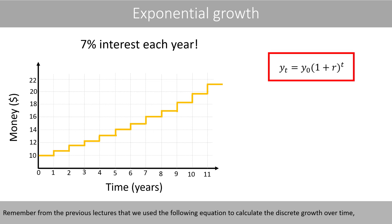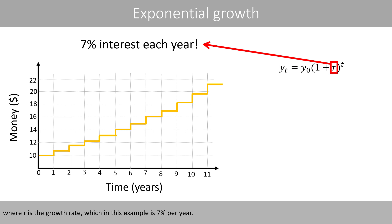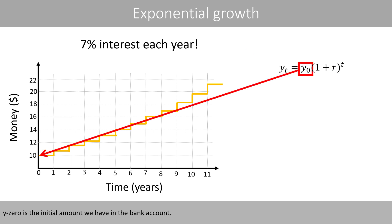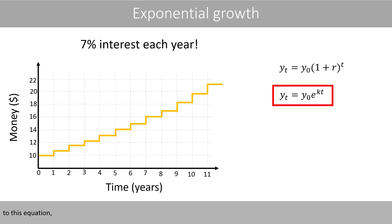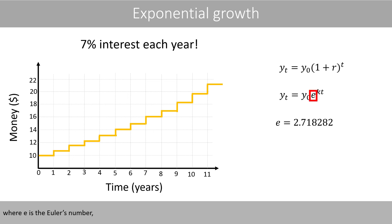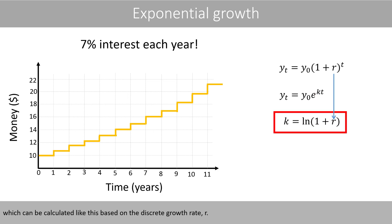Remember from previous lectures that we used the following equation to calculate discrete growth over time, where R is the growth rate — in this example, seven percent per year — and Y0 is the initial amount in the bank account. We also saw how to go from this equation to one using Euler's number E and K, the continuous growth rate, which can be calculated based on the discrete growth rate R.